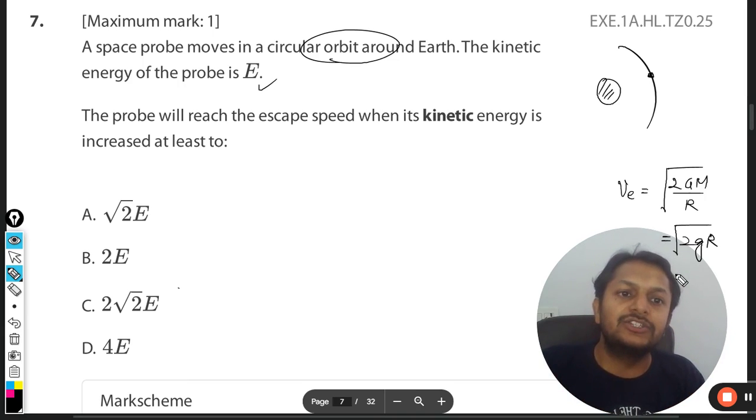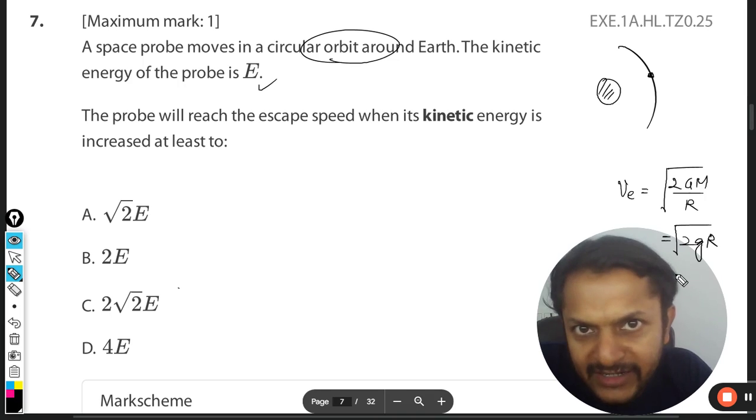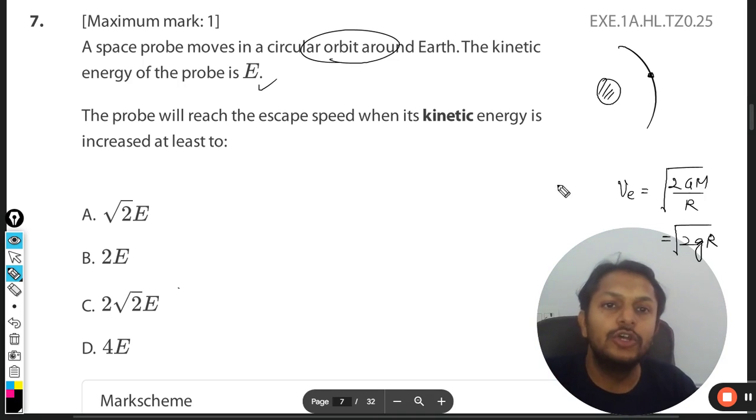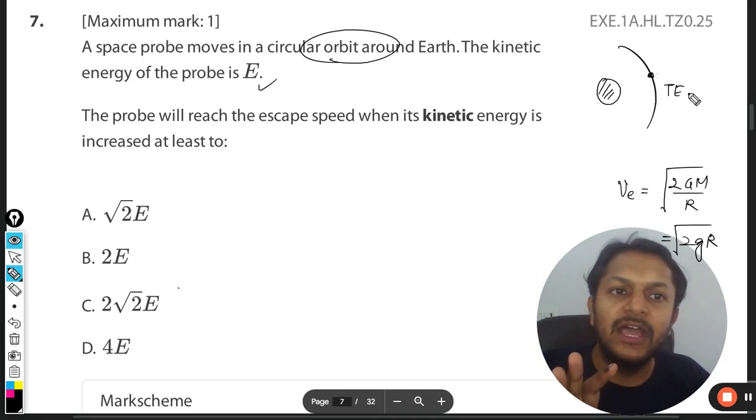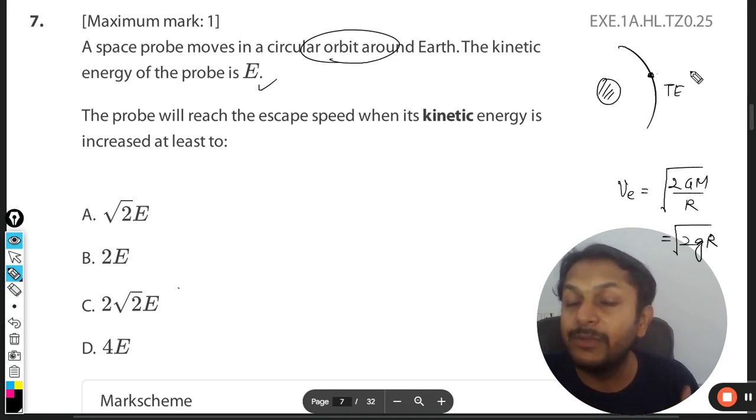So in this case we cannot use this formula directly. It means now what to do? So we will find the total energy of the satellite in the motion. We know that the total energy will be negative according to the bound state criteria. Obviously, some energy has to be given to it. The total energy afterwards should become zero. That is the concept.